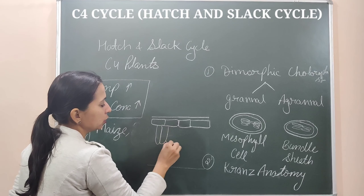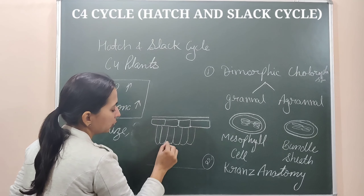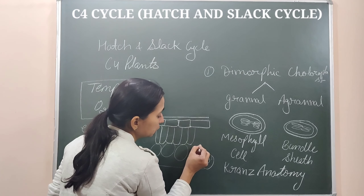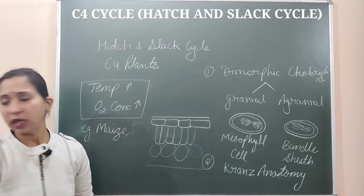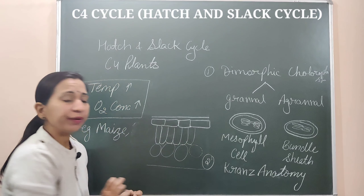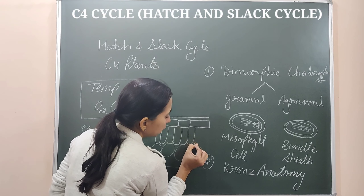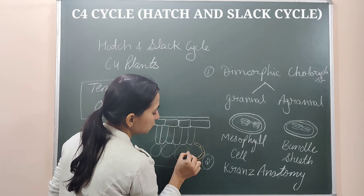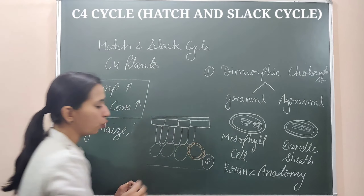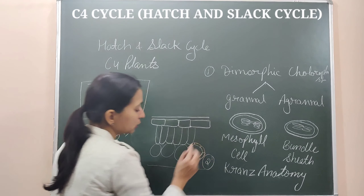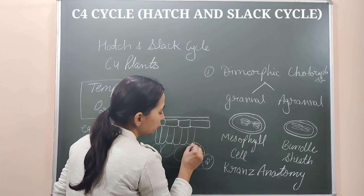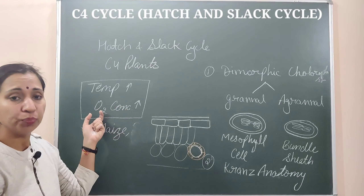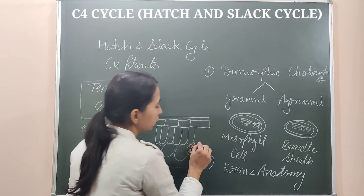In Kranz anatomy, the leaf has mesophyll cells — palisade parenchyma and spongy parenchyma — with vascular bundles in between. Around the vascular bundles, cells are arranged in a wreath-like ring, and these are known as bundle sheath cells. These cells have thick walls and very little intercellular space. This arrangement where vascular bundles are covered by bundle sheath cells is known as Kranz anatomy, and it is another adaptation of C4 plants.